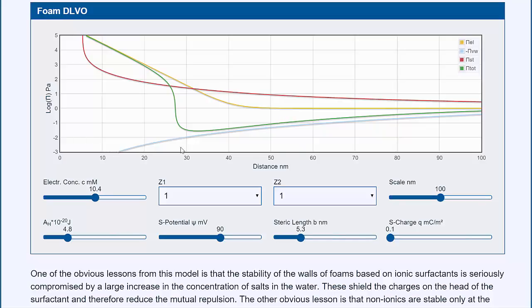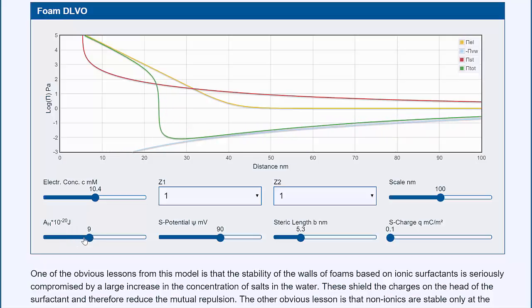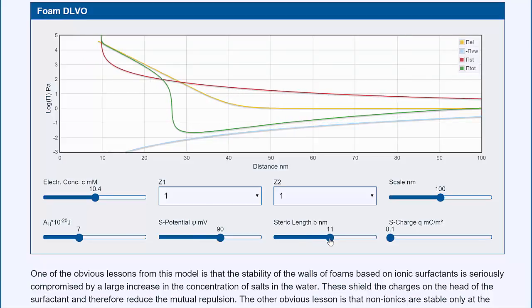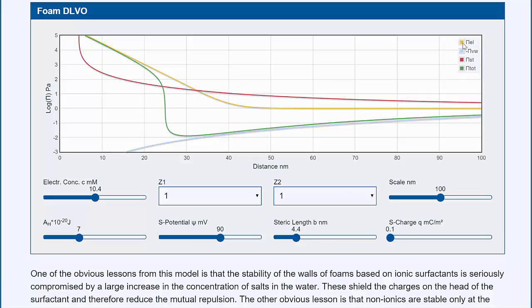and it's made up of the attractive force, which is the van der Waals attraction, which depends on the Hamaker constant. And it depends on the steric force, here in red, which depends on the length of your surfactant molecule. And it depends on the electronic force, in yellow.